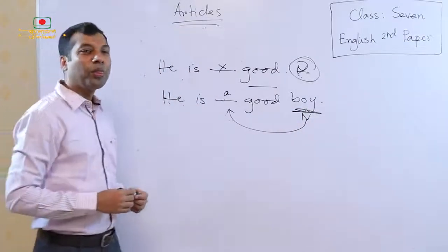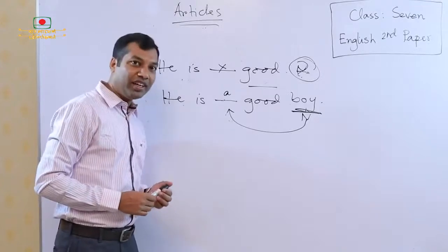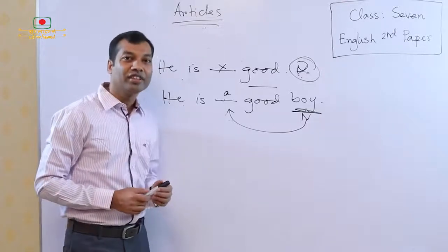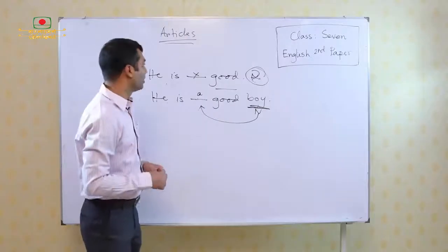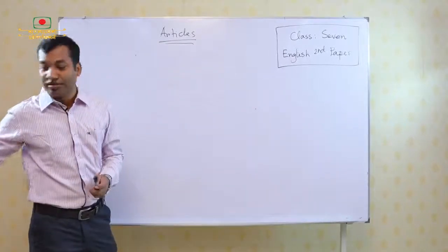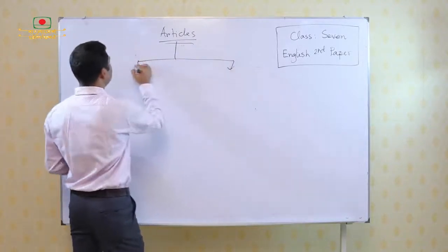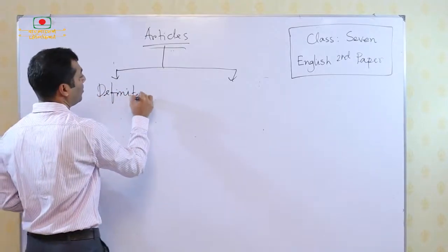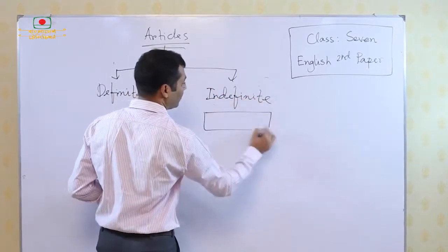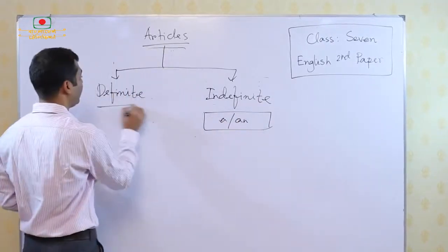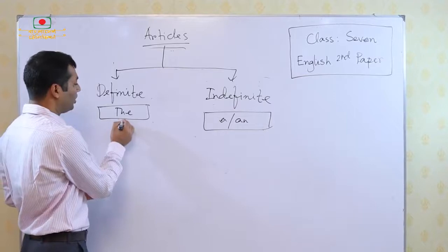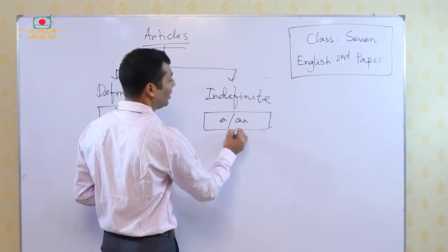Now we have to know the use of definite article and indefinite article. In this class, I will talk about the use of indefinite articles — that means the use of A and AN. Indefinite articles are A and AN, and the definite article is only one: THE. So we will talk about the use of THE in my next class. But now in this class, I will talk about the use of A and AN.